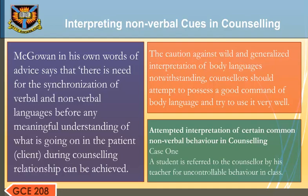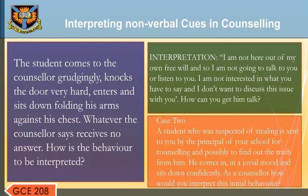Attempted Interpretation of Certain Common Non-Verbal Behavior in Counseling. Case 1: A student is referred to the counselor by his teacher for uncontrollable behavior in class. The student comes grudgingly, knocks the door very hard, enters and sits down folding his arms across his chest. Whatever the counselor says receives no answer. Interpretation: I am not here out of my own free will, so I am not going to talk to you or listen to you. Tell me what you have to say, and I don't want to discuss this issue with you.